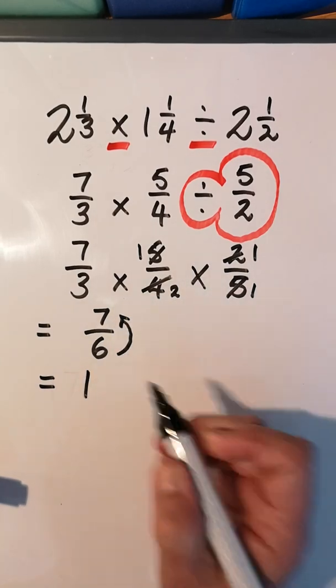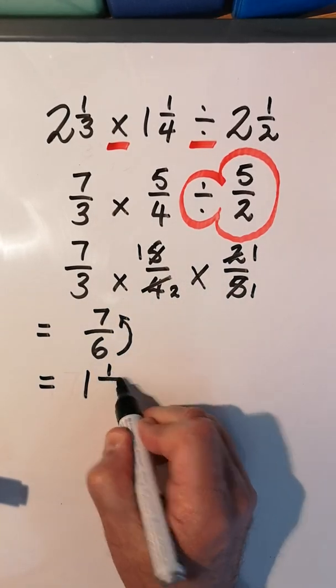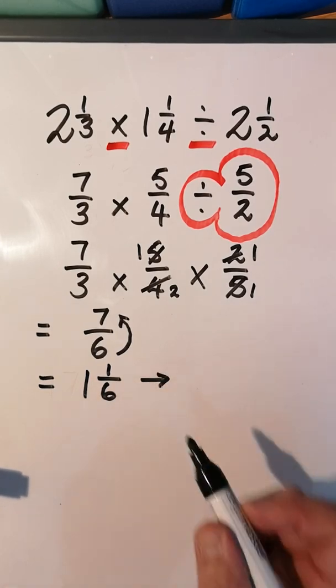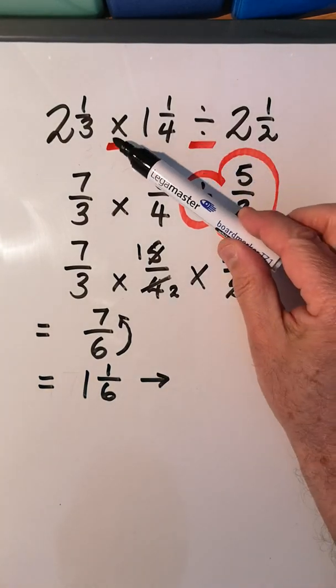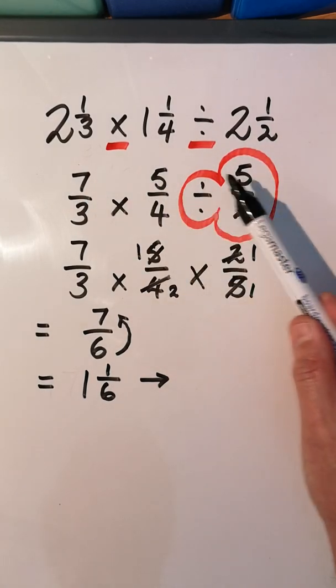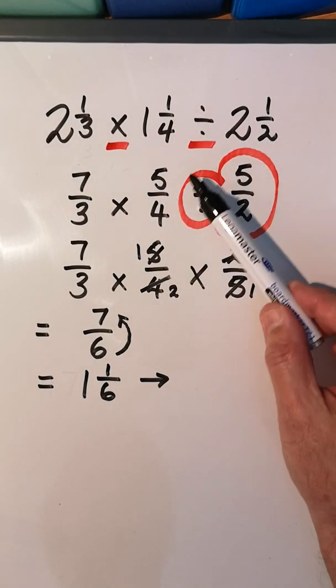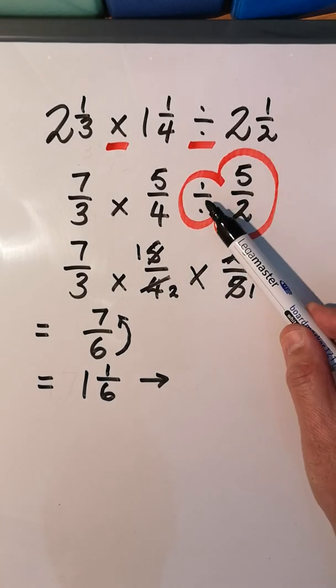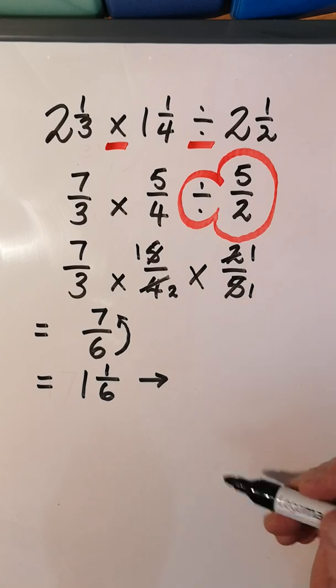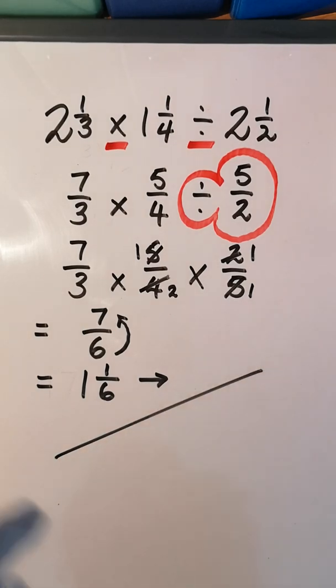So in this instance we had a multiply and a divide, and all we had to remember - once we've changed them to improper fractions - was to invert the fraction that comes after the division sign. It changed to a multiply, we simplified our answer, and there we go.